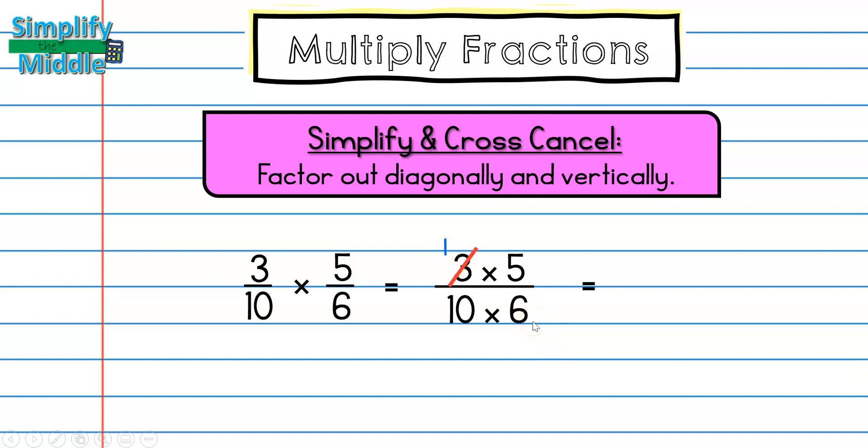Down here with this 6, I know 6 divided by 3 is 2 so I would cross it out and write 2. Even looking right here, multiplying across, I can see that the problem is much easier. But I'm not quite done simplifying.